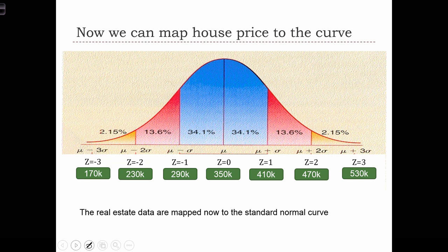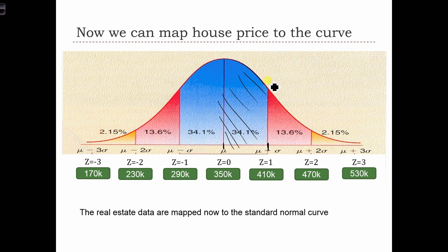Now let's take these solutions and place them on the normal curve. In the green boxes we have the raw values of the X variables, and on top of those I have the Z-scores. We can now answer questions about the probabilities of seeing houses between different prices. For example, what's the probability of seeing a house priced between $350,000 and $410,000? Because that corresponds to a Z-score of zero to one — a value between mu and mu plus sigma — there's exactly a 34.1% probability of seeing a house priced in that range.